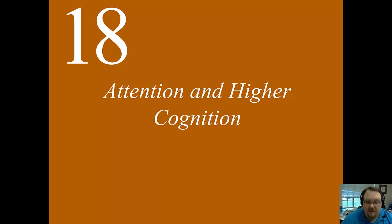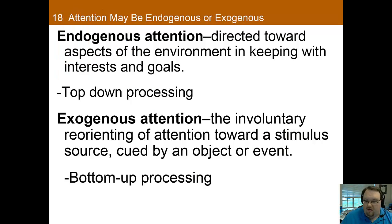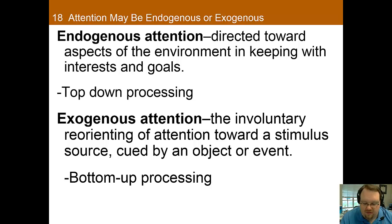Welcome back. We're going to talk a little bit more about attention in this video and talk about how attention is generated and shifted. There are actually two main types of attention worth discussing. Endogenous attention is attention directed toward aspects of the environment in keeping with the interests and goals of the individual — also thought of as top-down processing, where we consciously direct our attention to certain things.